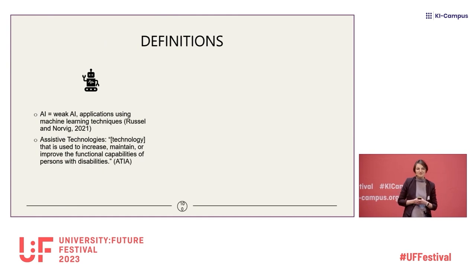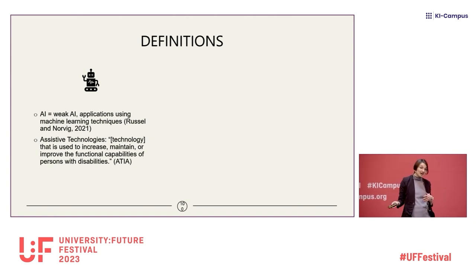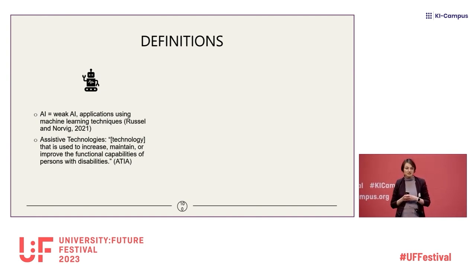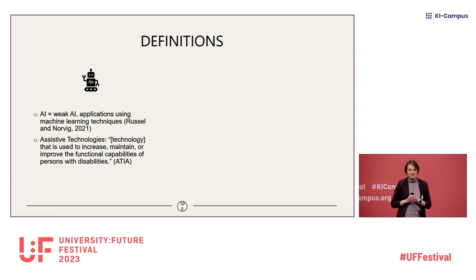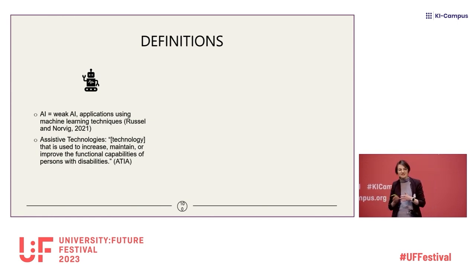Let's start with the introduction. When I talk about AI, I mean weak AI — not a super intelligent robot that can do everything, but really applications using machine learning techniques to solve a task, hopefully better than humans. I also talk about assistive technologies because they face different issues than general purpose technologies. Assistive technologies are technologies used to increase, maintain, or improve the functional capabilities of persons with disabilities. And as you will see, whether it is about enabling students is quite different from trying to monitor or evaluate them.